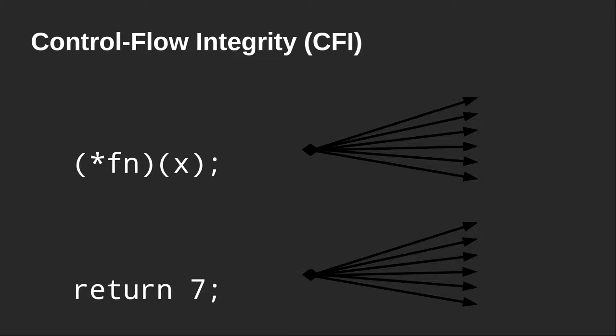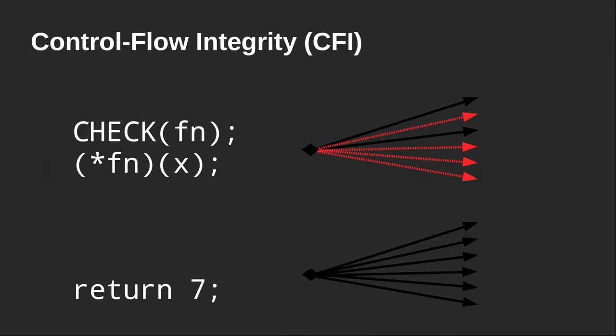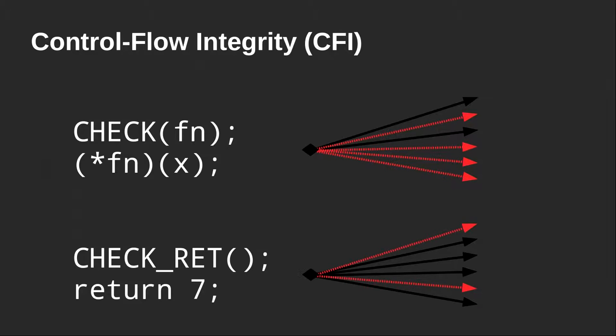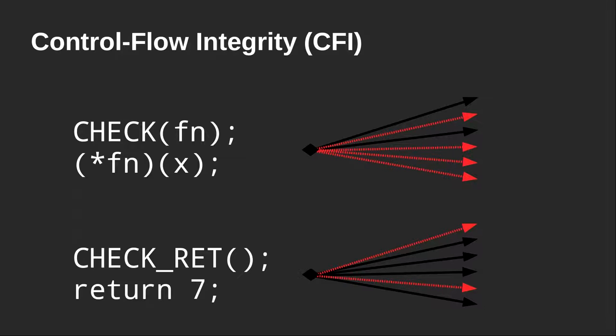Without control flow integrity, executing through a function pointer can reach any possible executable byte in memory — no restrictions at the machine level, same for return instructions. With CFI, we add additional restrictions: we check the function pointer against the set of statically determined targets, terminating the application if not in that set. Same for return instructions — we check the current return target against the statically determined set of allowed targets at compile time.